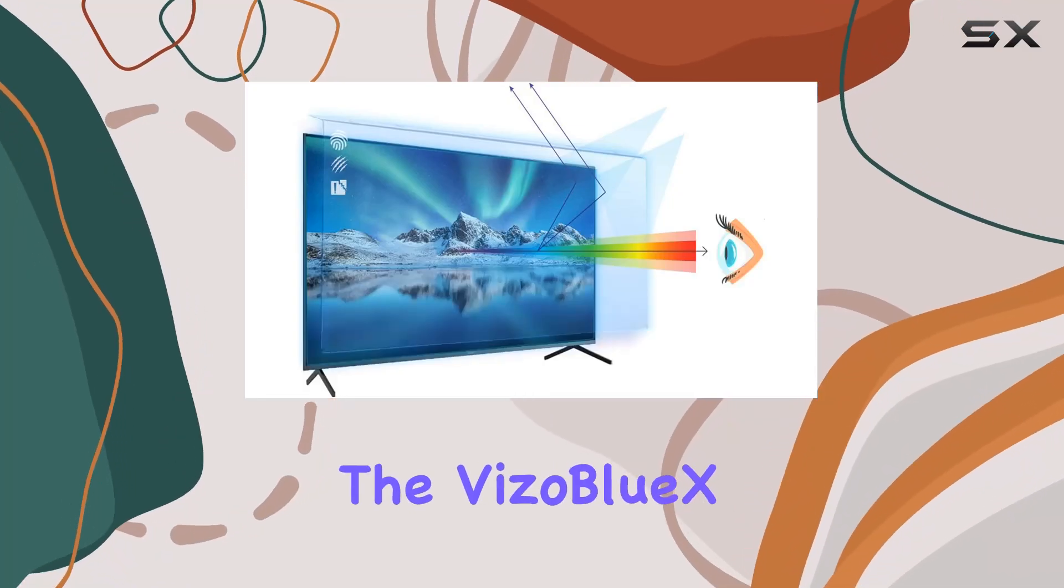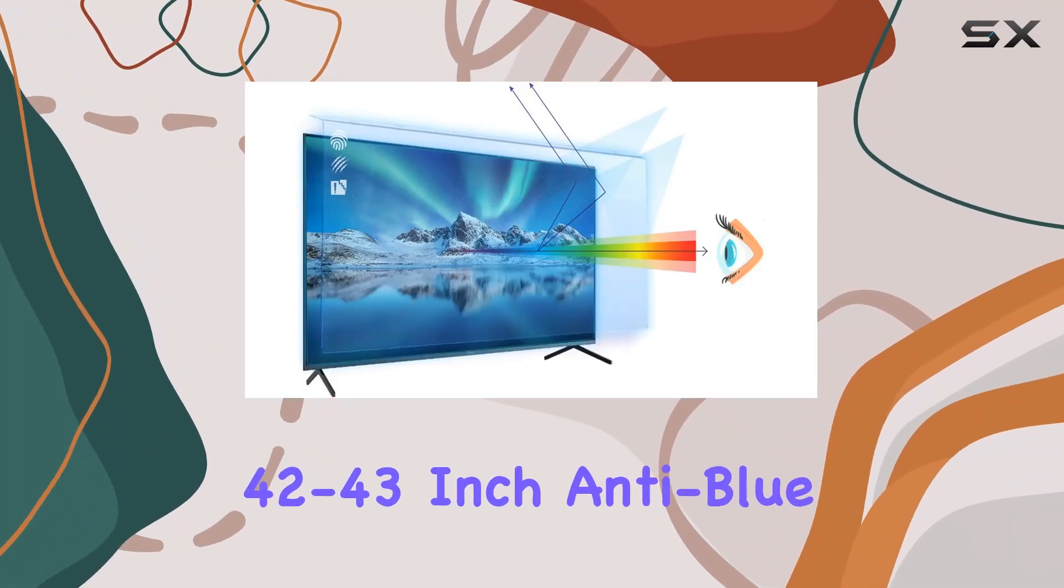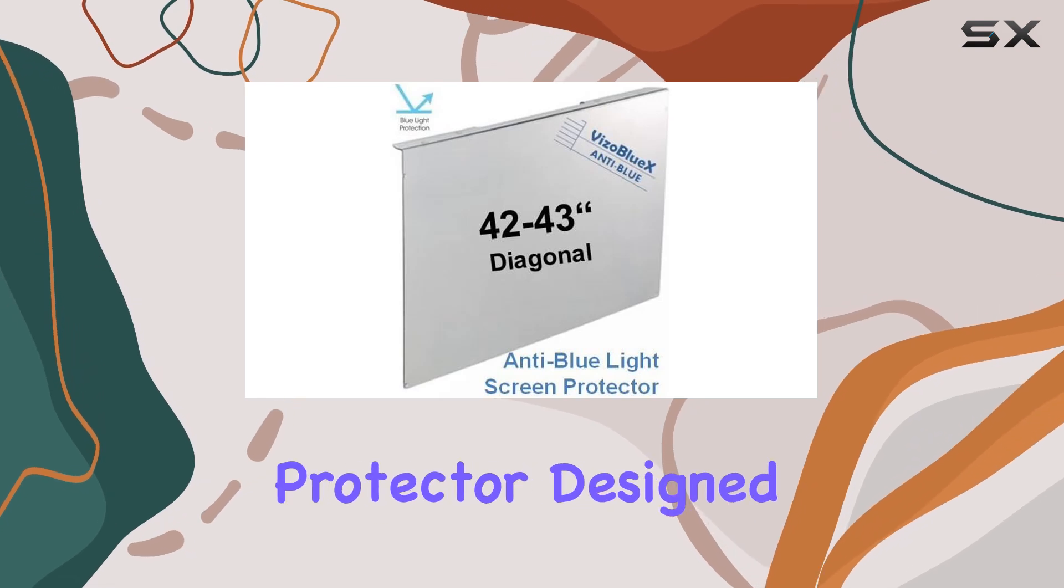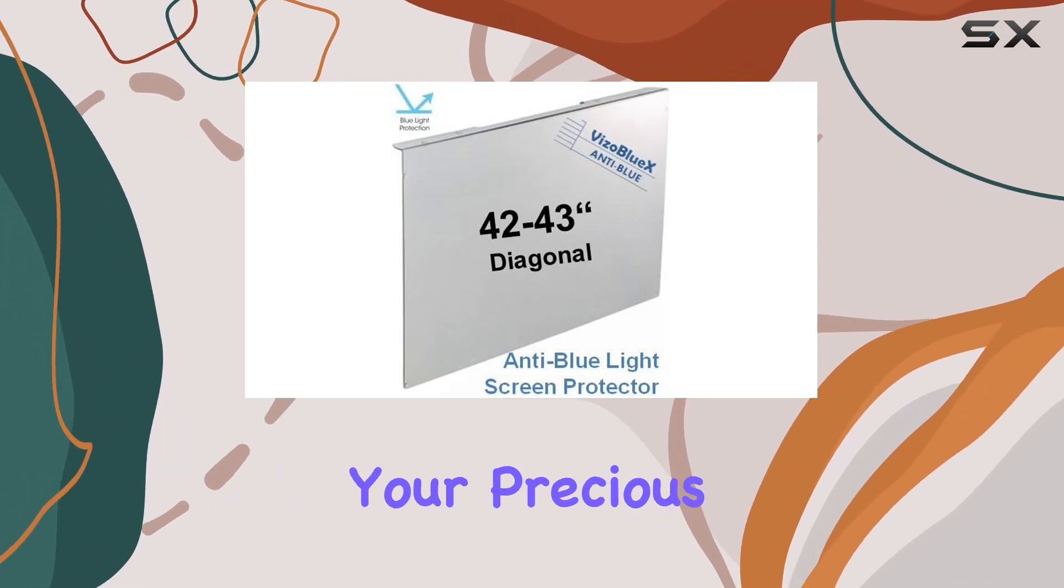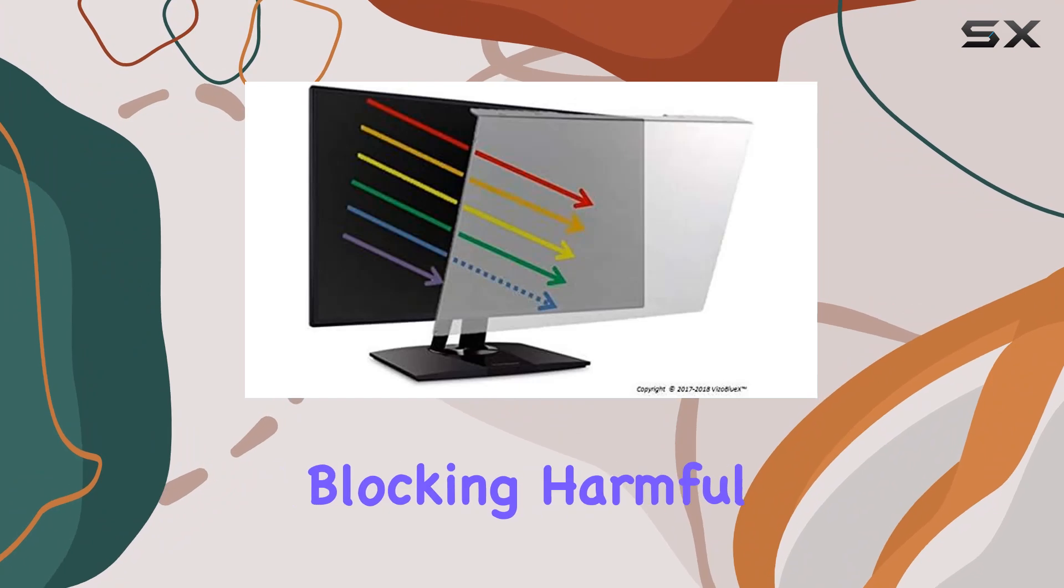Today we're diving into the Viso Blue X 42 to 43 inch anti-blue light TV screen protector designed to safeguard your precious TV display from damage while blocking harmful blue light.